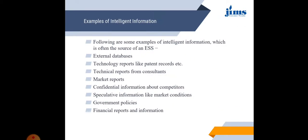The following are some examples of intelligent information which are often the sources of executive support systems: external databases, technology reports like patent records, technical reports from consultants, market reports, confidential information about competitors, speculative information like market conditions, government policies, and financial reports and information.